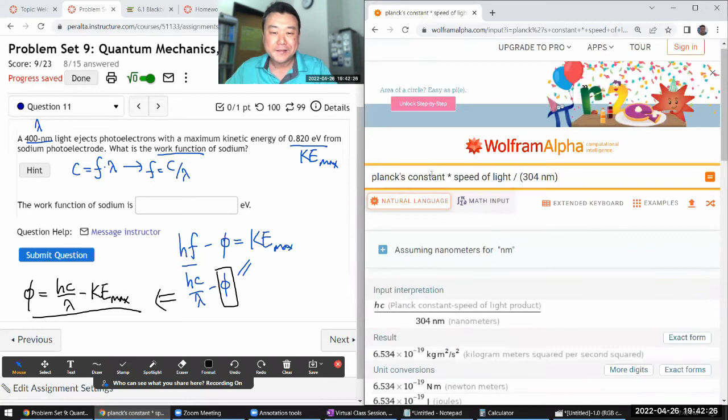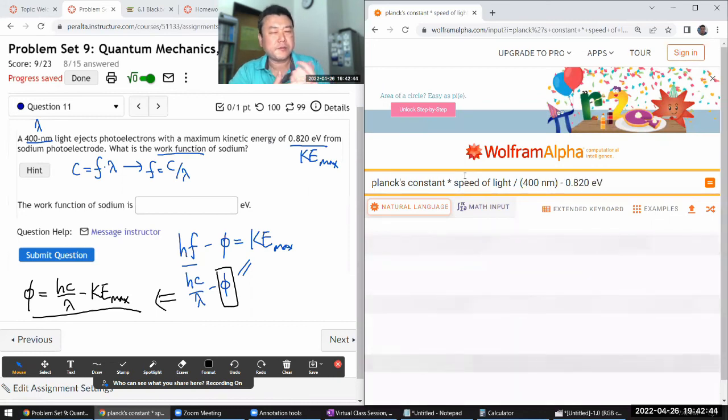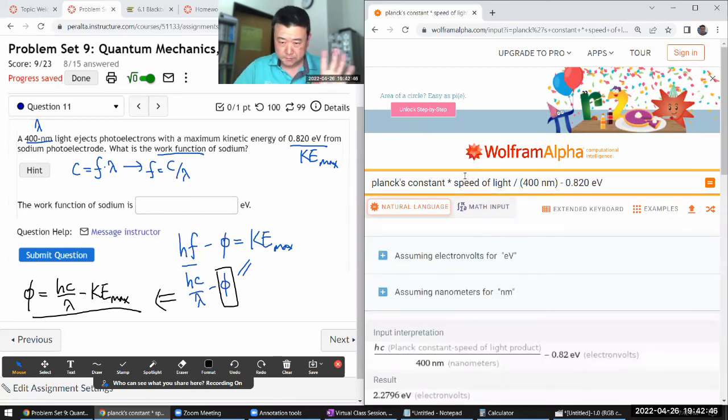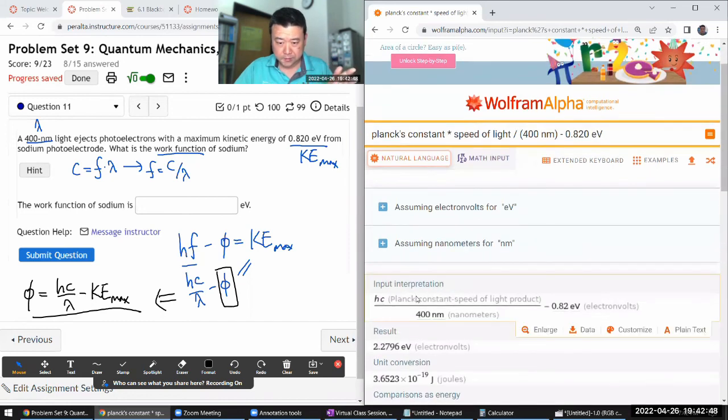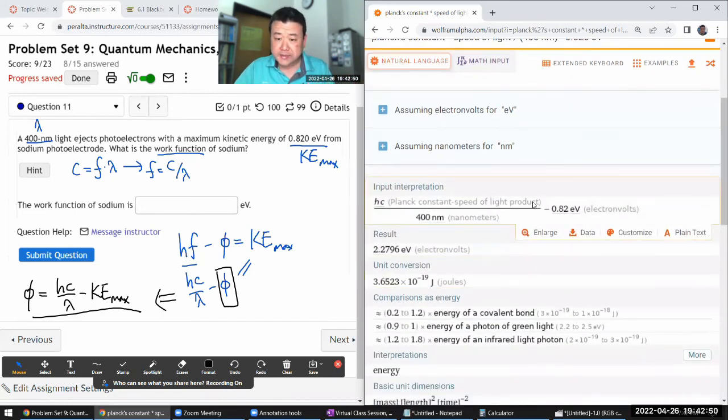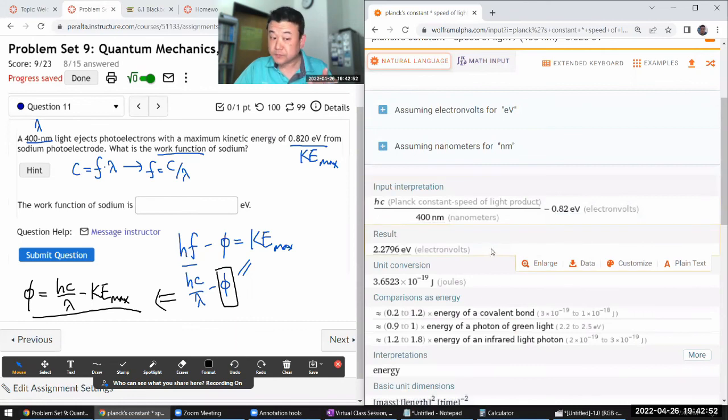So I have Planck's constant times speed of light, okay, divided by the wavelength of the light given, 400 nanometers. And this time I'm going to be subtracting the maximum kinetic energy, 0.80 electron volt. I think Wolfram Alpha will understand. Yeah. Double check that everything is intended.